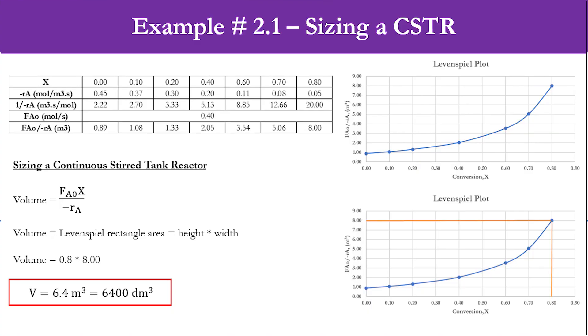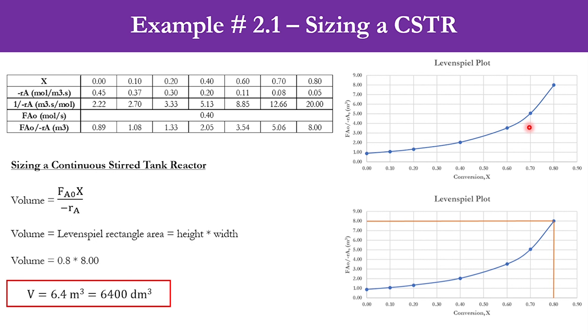Starting from the previous lecture, at the end we sized the CSTR and calculated its volume, which came out to be 6.4 cubic meters or 6400 cubic decimeters.